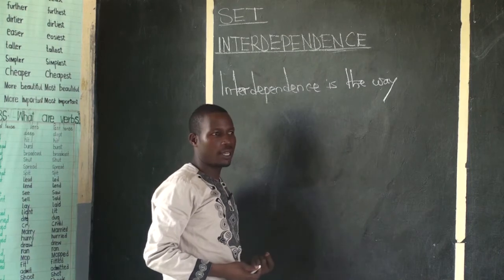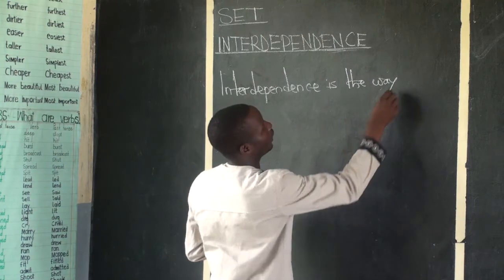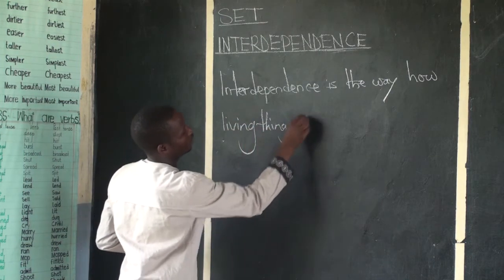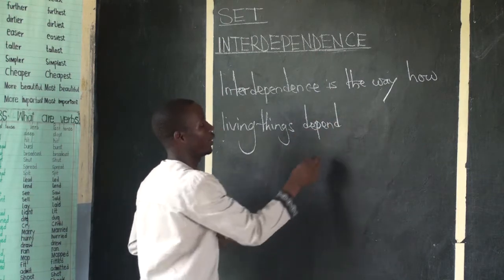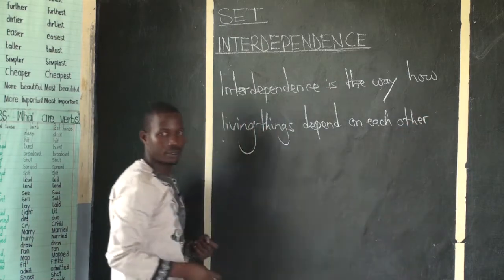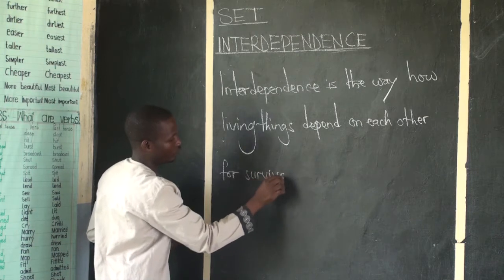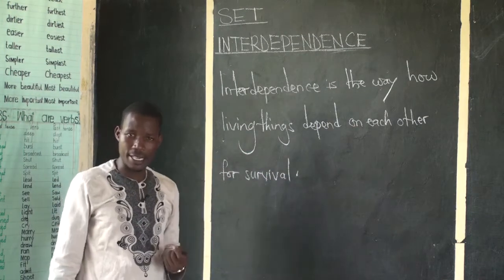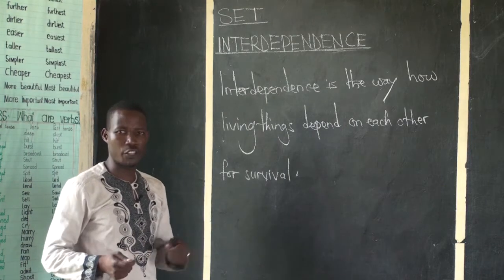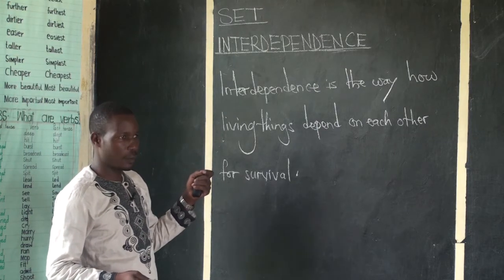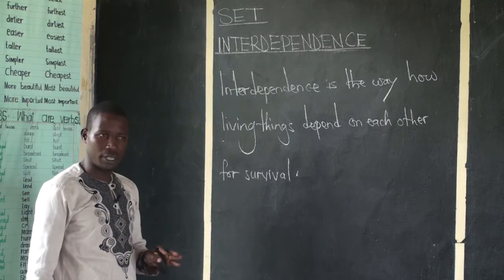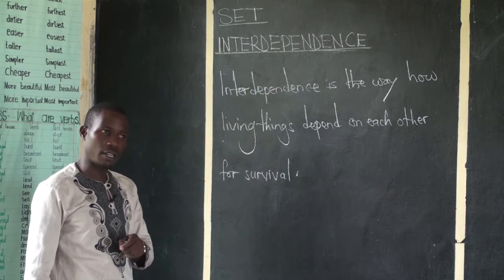Meaning, if you are not there, they won't be there — your living is also their living. This brings us a clear understanding of how animals, how plants, and all living things in the environment live and support each other. Simply, interdependence is the way how organisms in the environment survive, and we can look at the main components of the environment.